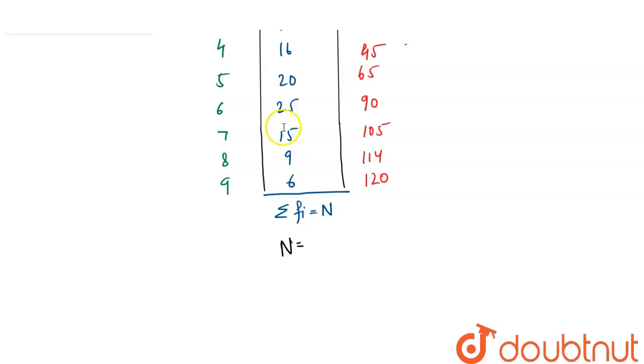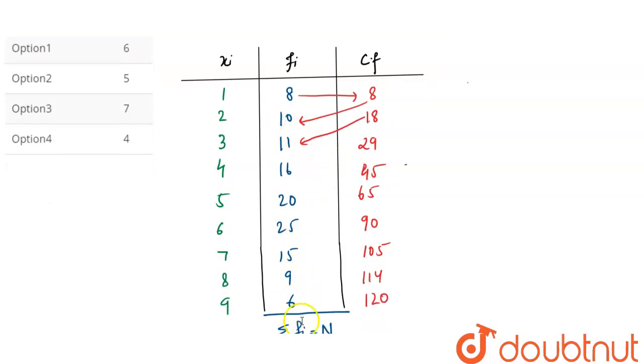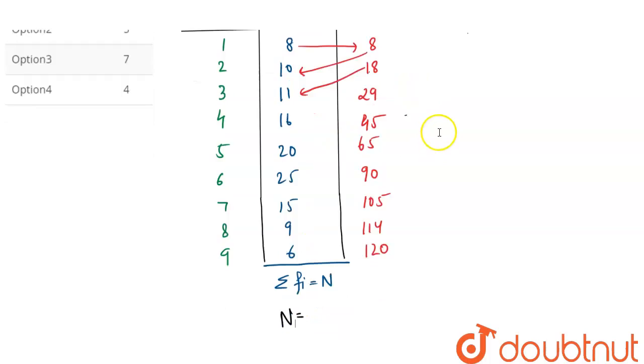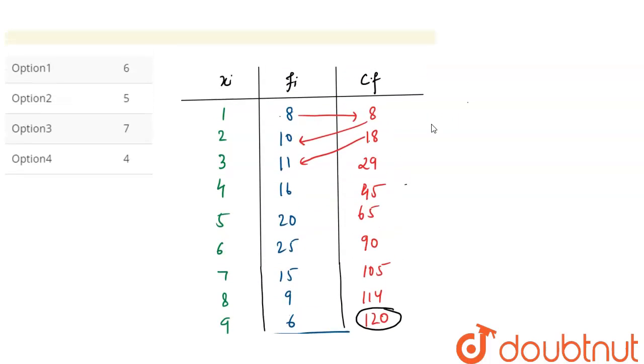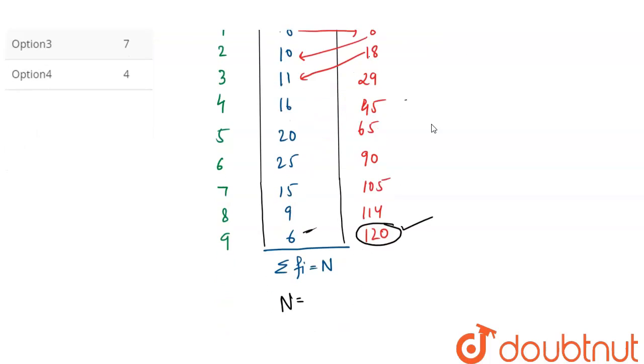Or we can write n as 120, because if we calculate these terms 8 plus 10 plus 11 plus up to 6, we will get the answer that is 120.